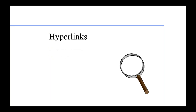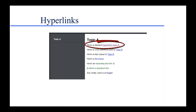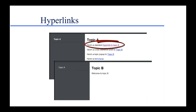Let me start off by diving right into standard hyperlinks, otherwise known as jump links. I have a little Flare project with demos, and I have a standard hyperlink — I'm in topic A and I have a hyperlink to topic B. If I click on it, I jump to topic B. The screens are offset so you can see the starting and ending screen, but typically the target screen replaces the starting screen, so topic B would sit on top of topic A.